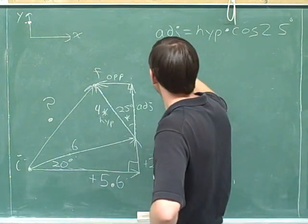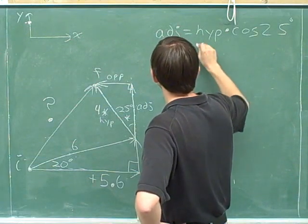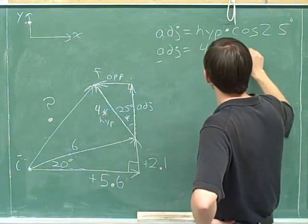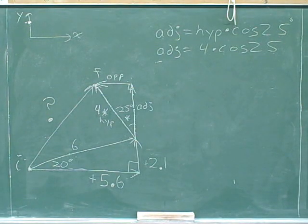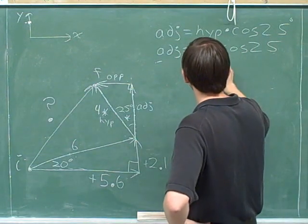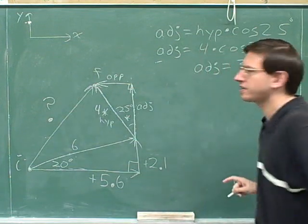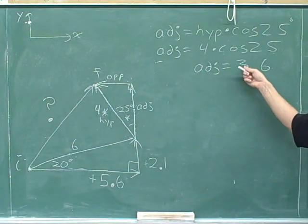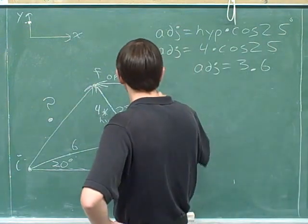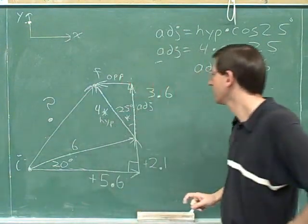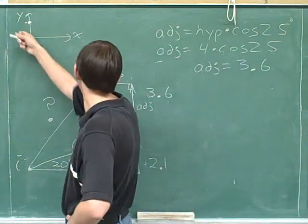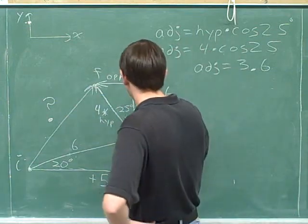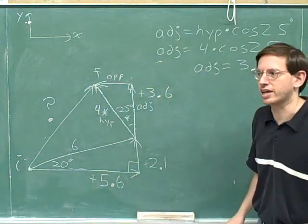We use the cosine to find the adjacent side. The hypotenuse is 4, so we calculate 4 times the cosine of 25, which turns out to be 3.6. Trig functions only give us magnitudes, so I'm not going to put a sign in yet. We've chosen up as the positive direction and this component was pointing up, so this is a positive 3.6.